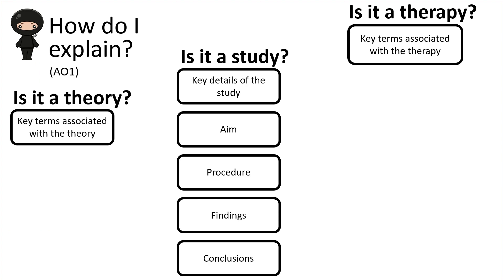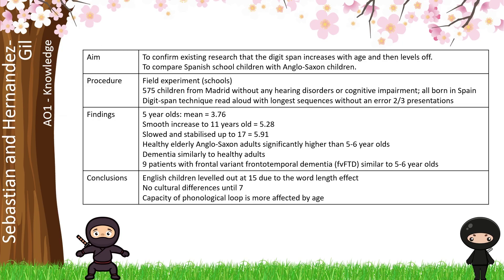With this study we need to have key specific details about the aim, procedure, findings, and conclusions. The key focus for Sebastian and Hernandez Gill is the aim of looking at how digit span increases with age, and therefore we could use this in a developmental psychology question. The main comparison is Spanish school children with Anglo-Saxon children. Although this study had an element looking at dementia patients, the focus is about children and their development.